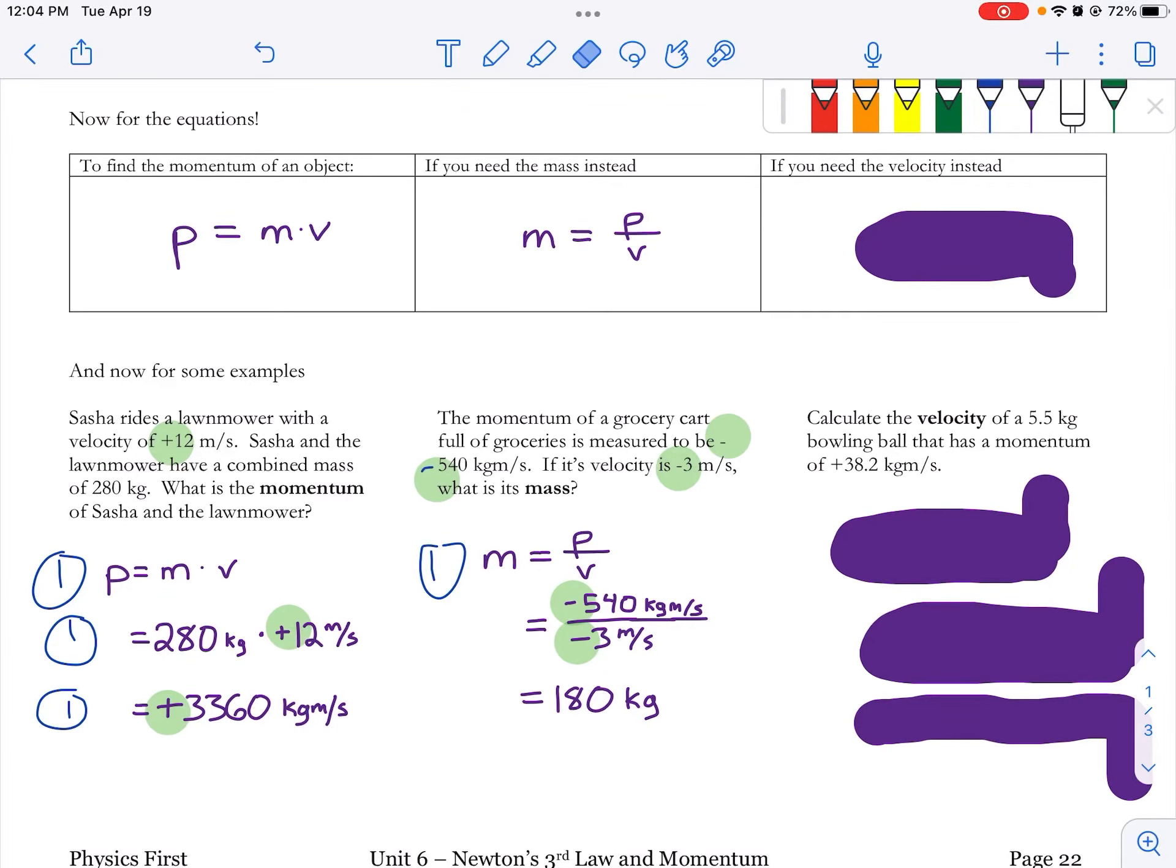All right, one last example. Now, what do you need to do if you need to find the velocity of an object? Well, we need to start back from our equation for momentum, because over here we've got velocity on the bottom, and a lot of people are going to see that as difficult to start with.